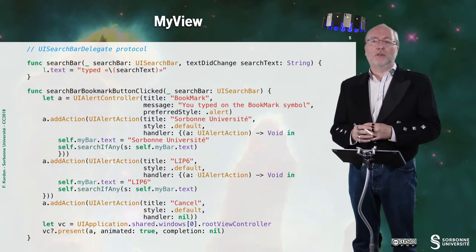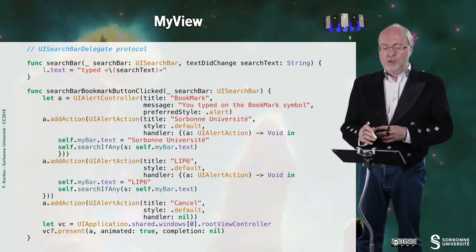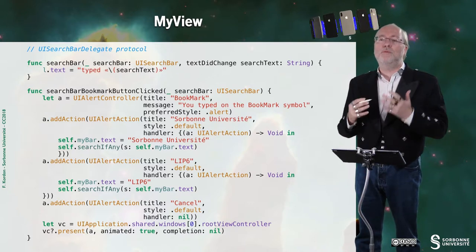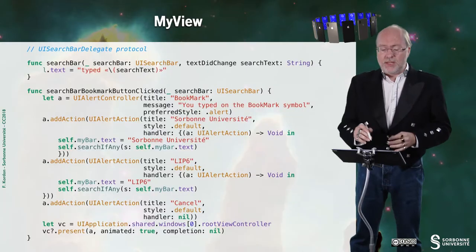And now, we are ready to implement the protocol. So, the UISearchBarDelegate protocol. So, here, the first one is the one that allows me to update the changes of the text. So, as you type text, then I update the label. And I say that here is what was typed.